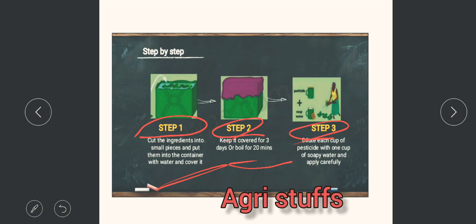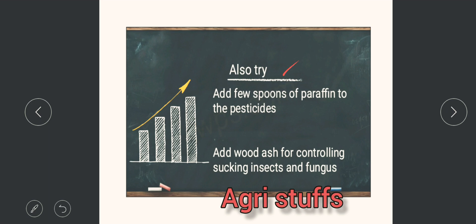Can also try with few spoons of paraffin to the pesticides, and you can also add ash for controlling sucking insects and fungus.